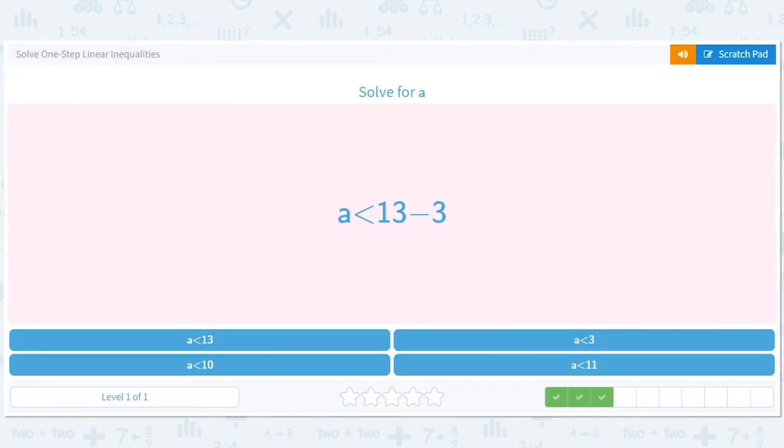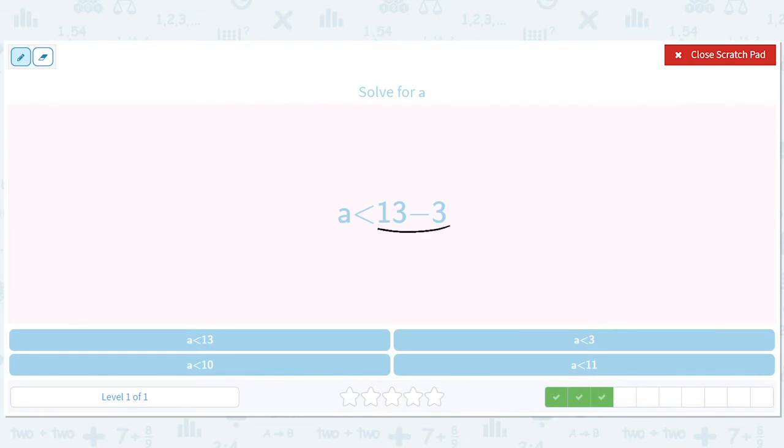A is less than 13 minus 3. 13 minus 3 is 10. So A is less than 10.